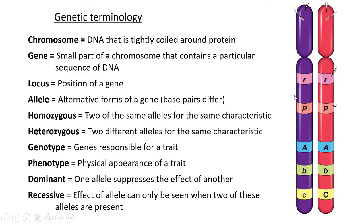A gene is specifically a small part of a chromosome that contains a particular sequence - here we have one gene on one chromosome and the similar gene on the other chromosome. This gene is just a small piece of the long DNA strand. The locus refers to the position of the gene on the chromosome - for example, where the R is found up here is the locus, its position on the chromosome.